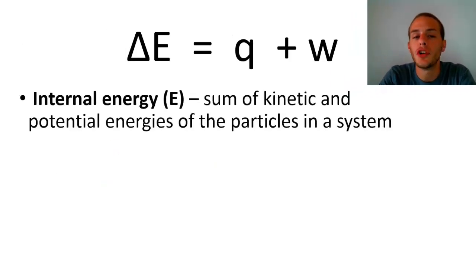So again, delta E, that's the change of internal energy. So internal energy is the sum of all of the kinetic and potential energies of the particles that compose a system. So it's all those kinetic energies, all those potential energies. It's basically the total energy of a system.